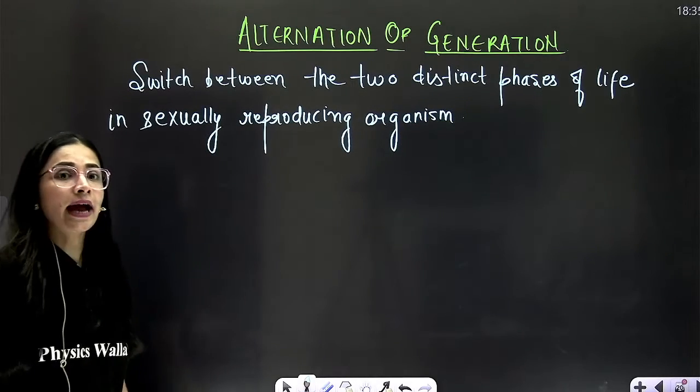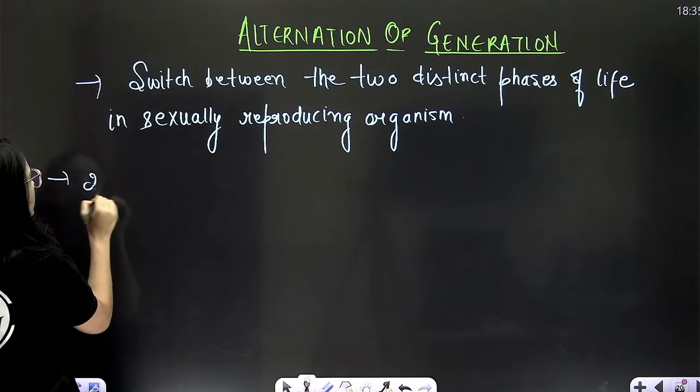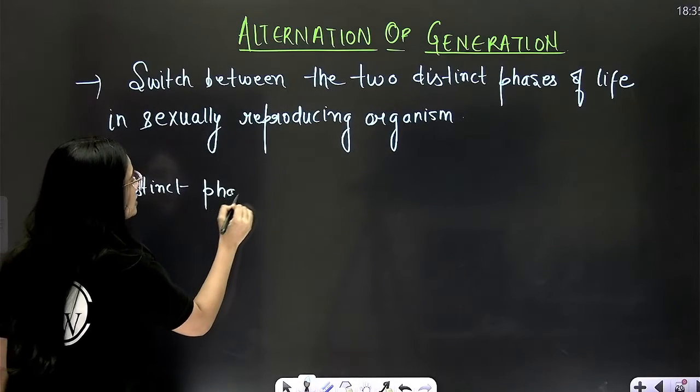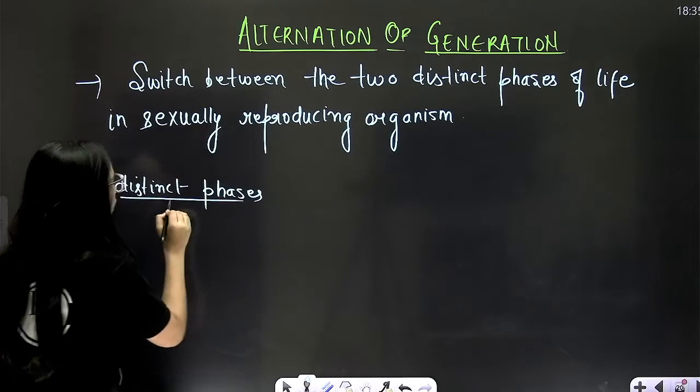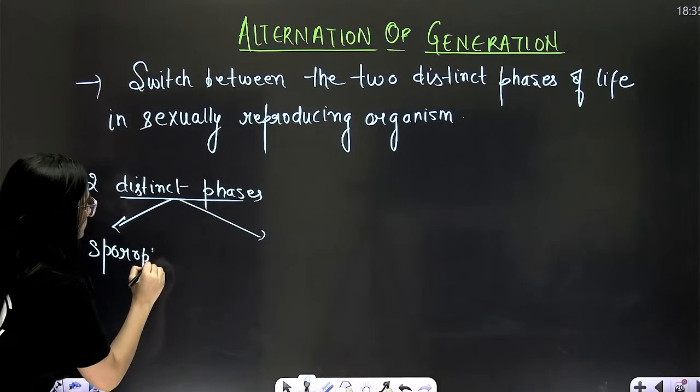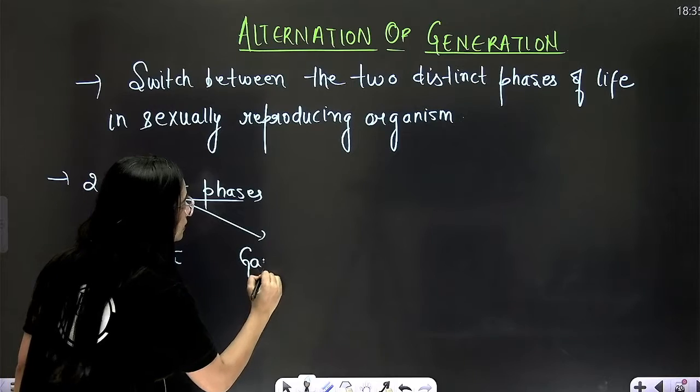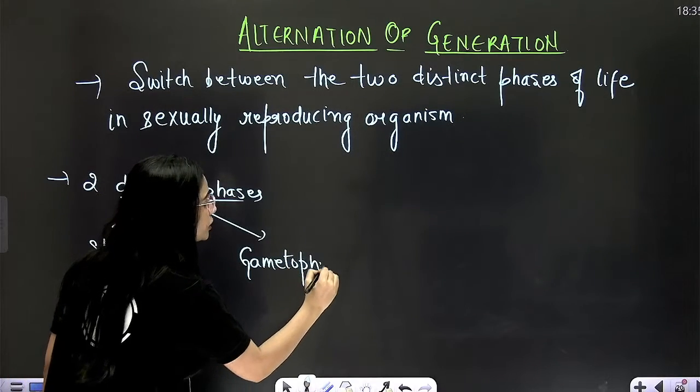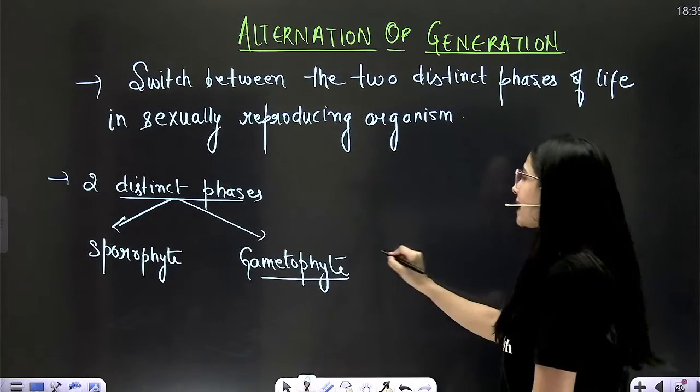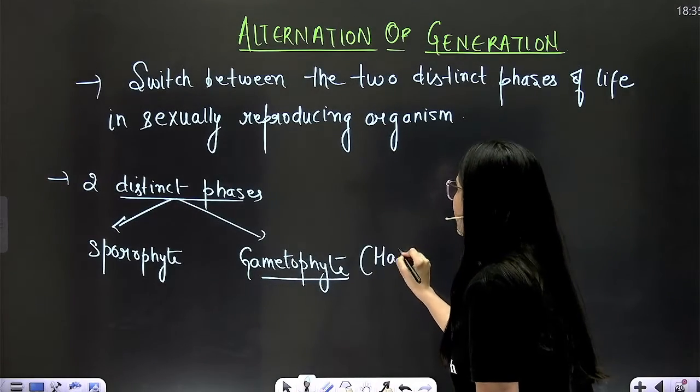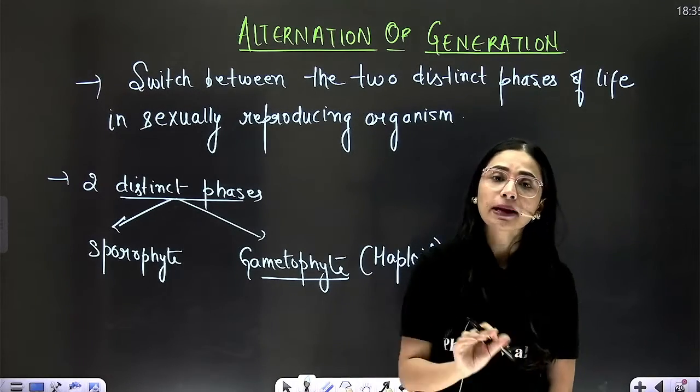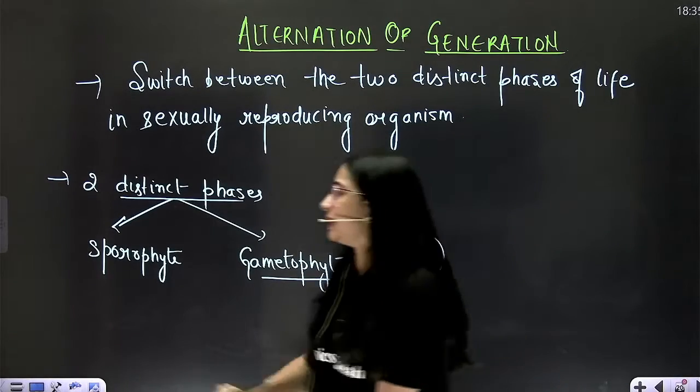Correct? And what are the two distinct phases? Second point. The two distinct phases of the life. What are those? What did I say? Yes, sporophyte and gametophyte. Correct? Gametophyte is represented as the haploid phase, whereas sporophyte is represented as the diploid phase of the life cycle.